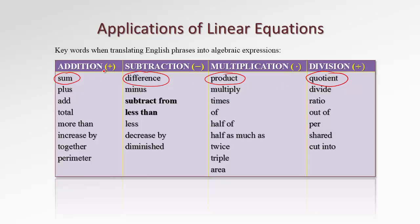Let's start with addition. Words that indicate addition include: plus, add, total — total means add all the entries — more than, increased by, together or all together. And also perimeter, because if you have any polygon and you want to find a perimeter, you need to add all the sides — A, B, C, and D. So perimeter indicates addition.